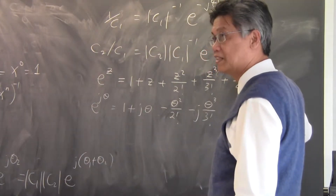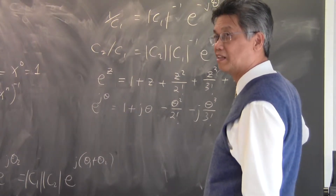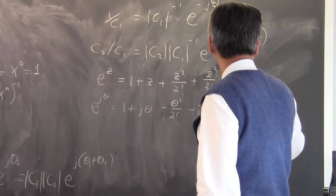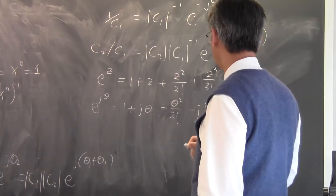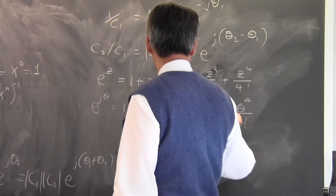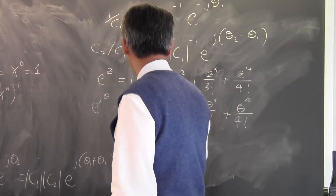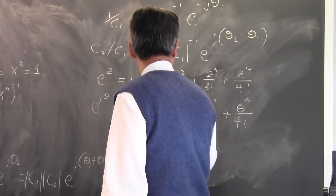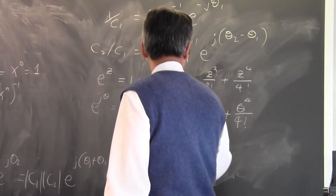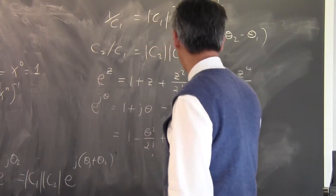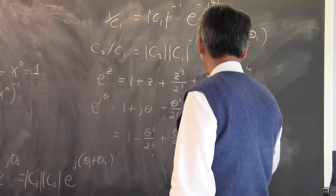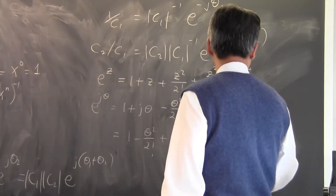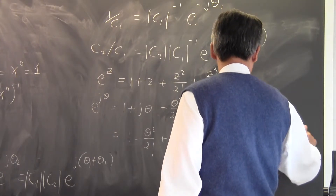Then you have j four times — what do you get? Plus one. So you have θ⁴ over 4 factorial. Then you separate this series into a real part and an imaginary part. The real part looks like: 1 minus θ² over 2 factorial plus θ⁴ over 4 factorial. The imaginary part looks like: jθ minus j θ³ over 3 factorial plus something else.